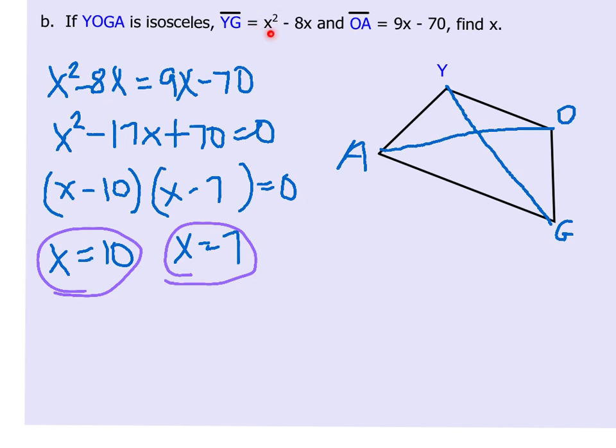If I plug 10 in for X here, I get 10 squared minus 8 times 10. Well, 10 squared is 100 minus 8 times 10 is 80, so 100 minus 80 is 20. If I plug 10 in over here for X, I get 90 minus 70, which is 20. So both of those answers make sense.